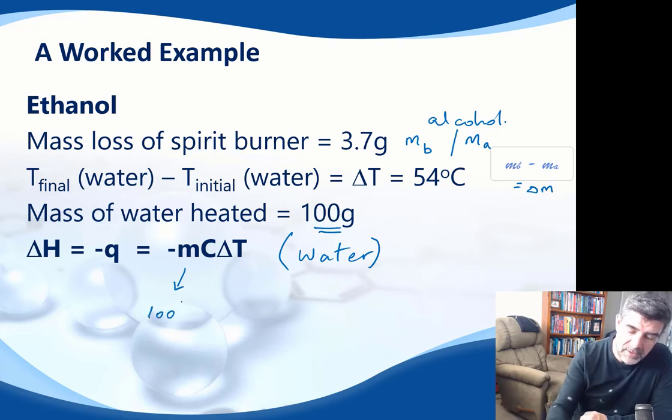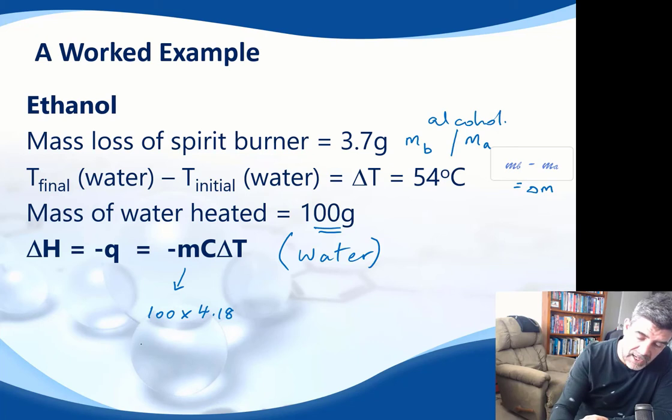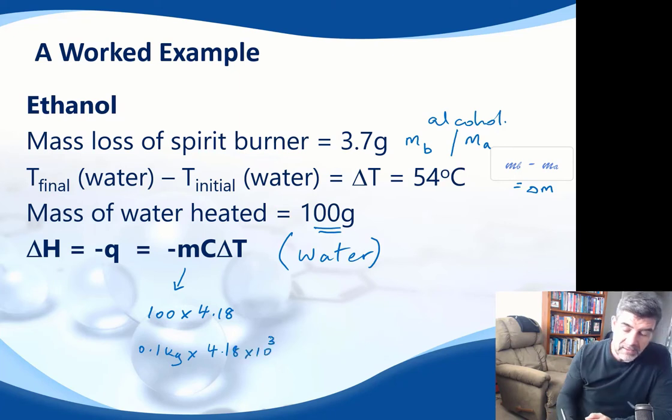And I'm going to put 100 because I'm going to use my Q value of 4.18. I'll get exactly the same value if I change that to 0.1 kilograms and multiply it by 4.18 times 10 to the 3 for kilograms. But the numbers will be the same. And then I'm going to multiply that by the delta T.